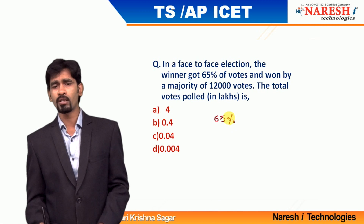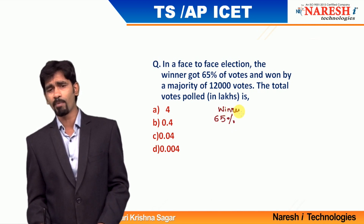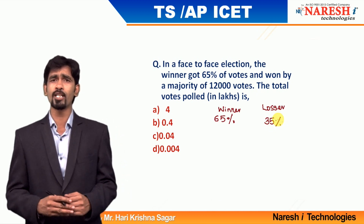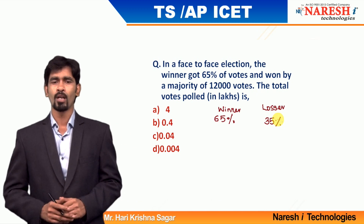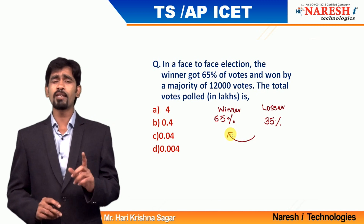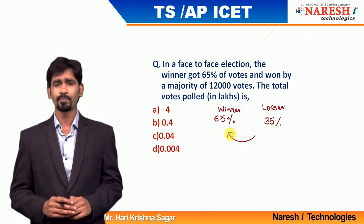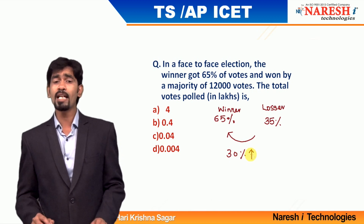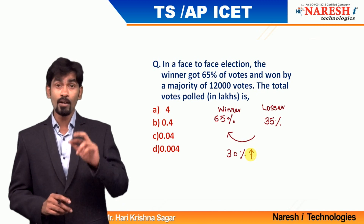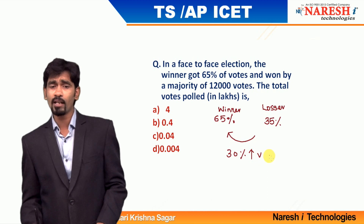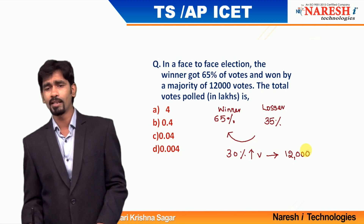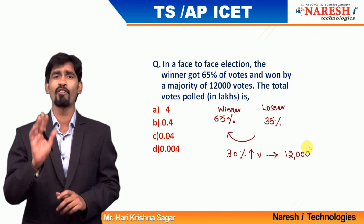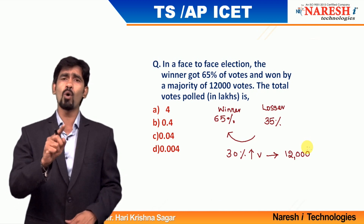Winner got 65 percentage of the votes. That means the loser will get 35 percentage, because the total votes polled is always 100 percentage — if one person got 65, the other gets 35. What is the difference in percentages? From 65 to 35 there is a difference of 30 percentage. So 30 percentage is the total majority votes received by the winner. The winner is getting 30 percentage of the votes extra and won with 12,000 votes.